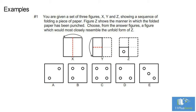Let's look at some examples. Number one: you are given a set of three figures X, Y, and Z showing a sequence of folding a piece of paper. Figure Z shows the manner in which the folded paper has been punched. Choose from the answer figures the figure which would most closely resemble the unfolded form of Z.